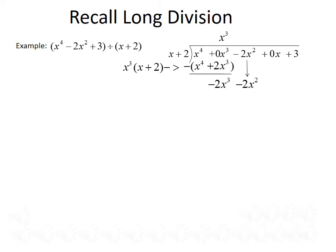We bring the next term from the dividend down, so we have negative 2x cubed minus 2x squared, and we go through another round. What would we have to multiply the divisor x by to get negative 2x cubed? That would be negative 2x squared. So we do that multiplication — negative 2x squared times x plus 2 — which gives us negative 2x cubed minus 4x squared, which we subtract from above, giving us 0 plus 2x squared.